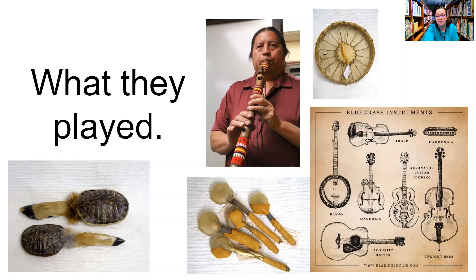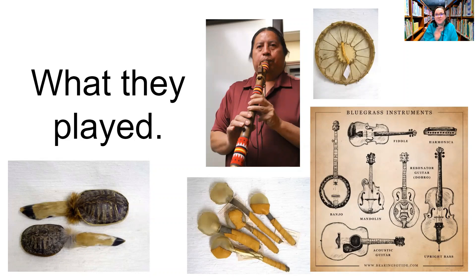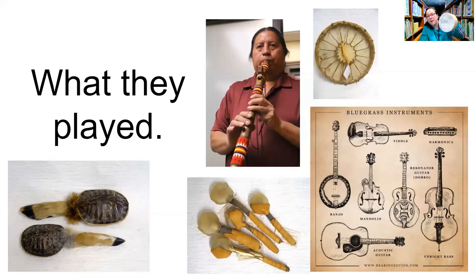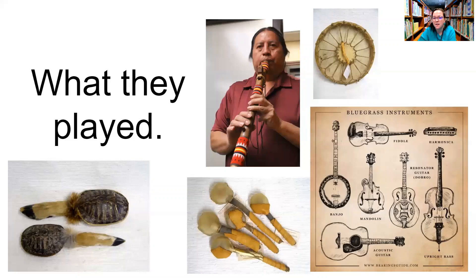The next one is a buffalo drum. Way before we had all this fabulous technology, people would use what they could from the land. Buffalo drums were made from the skin of buffalo — Native American tribes would hunt the buffalo, eat the meat, then take the skin and stretch it over a frame to make a drum. I have a buffalo drum — mine is not made from actual buffalo skin anymore, it's actually some really nice plastic. Different sizes make different sounds.